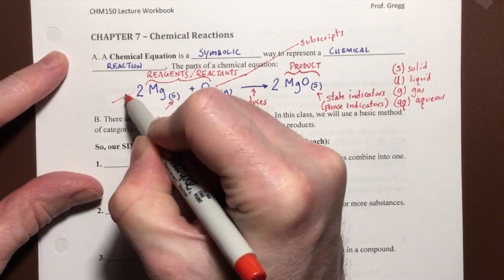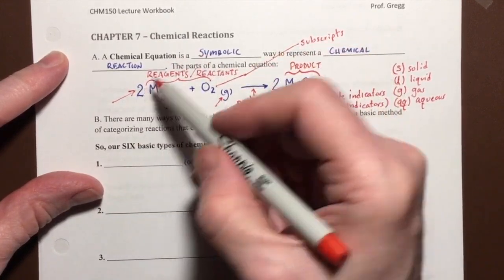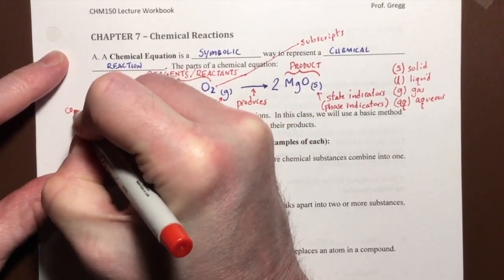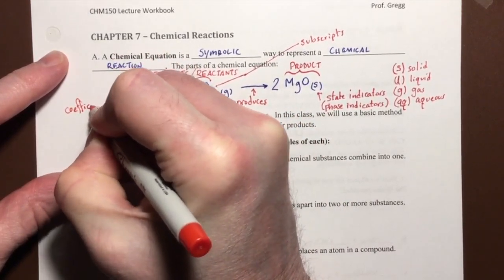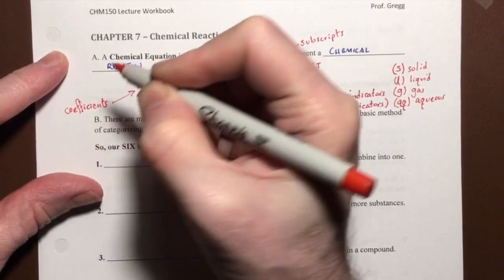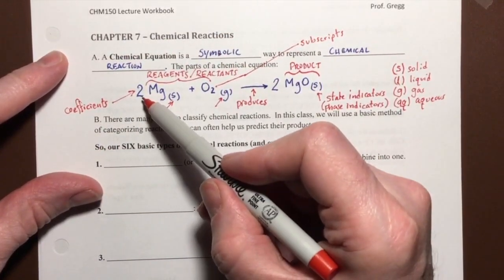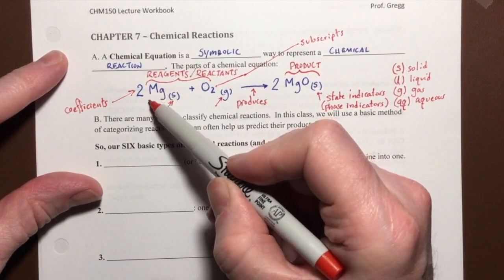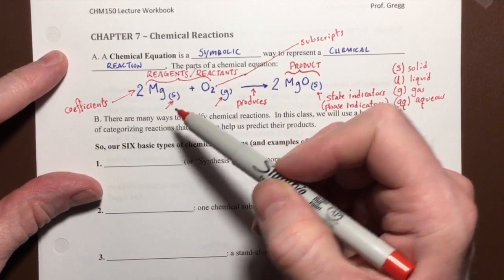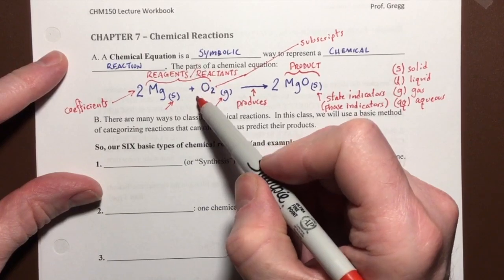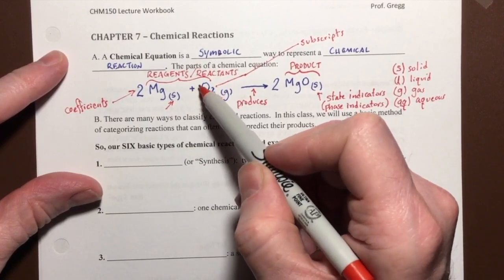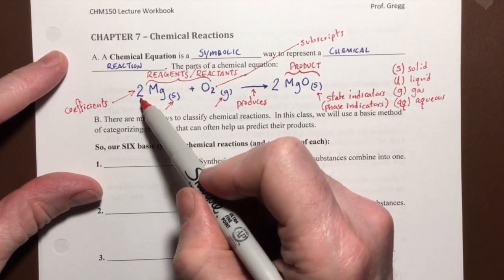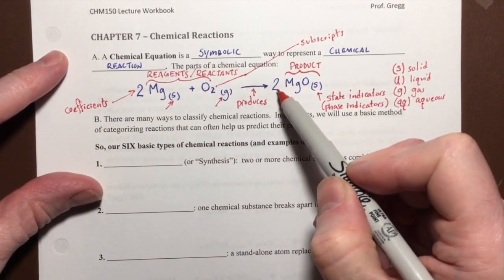The large numbers at the beginning of each substance are the coefficients. Just like in algebra, coefficients multiply the term that follows them. If a coefficient is not written, it is understood to be a one—the ones are invisible. So my coefficients here are two, one, and two.